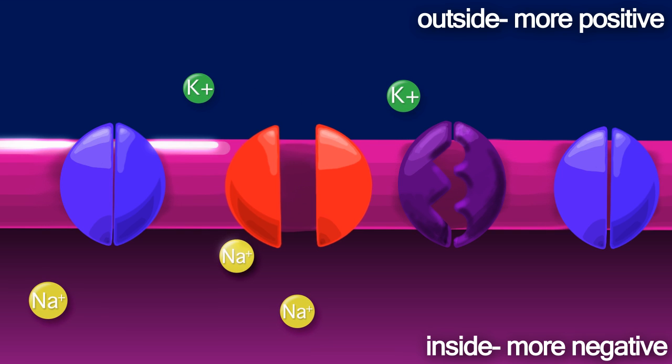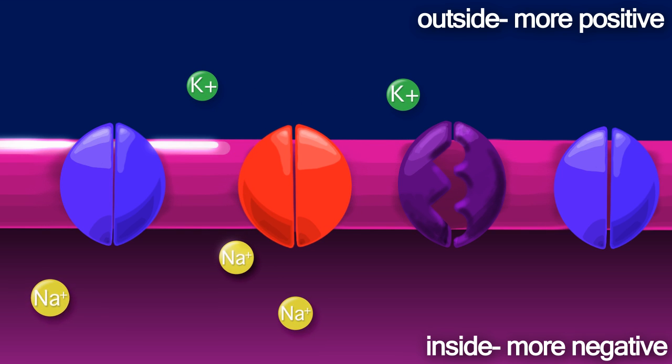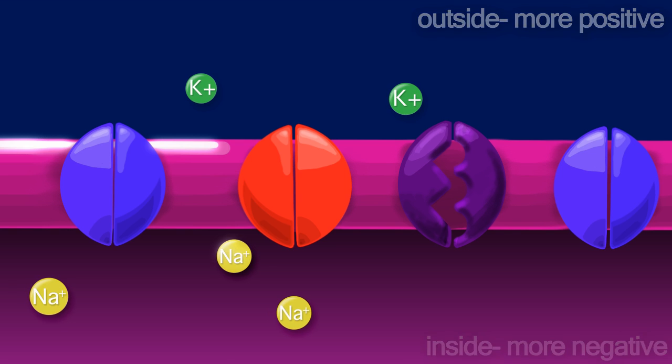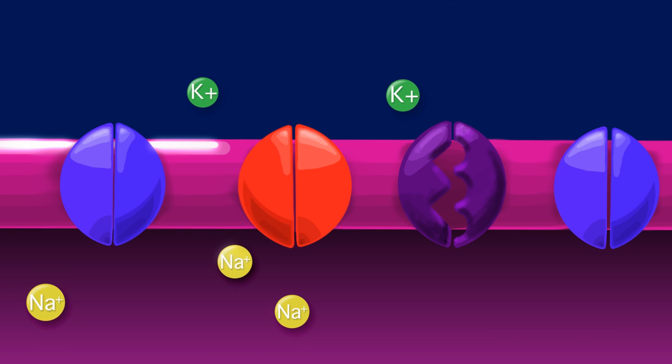The neuron returns to its polarized state in which the inside is negative compared to the outside. At this point, the charges are reset, however the ions are misplaced and must be switched.